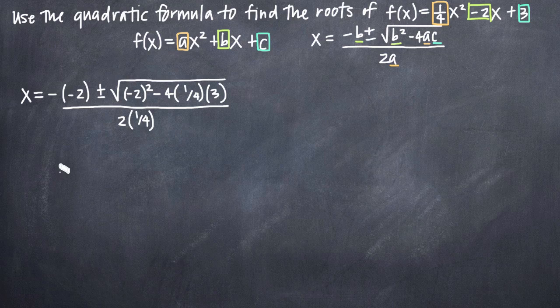So once we have all of our values plugged in, we just need to simplify as much as we can. So we have a negative negative 2, which will give us a positive 2. Plus or minus the square root. Negative 2 squared gives us 4. 4 and one-fourth here will cancel with one another and just become 1. And we'll be left with 3. So we'll get 4 minus 3 underneath the square root sign. All divided by 2 times one-fourth, which will just give us one-half.